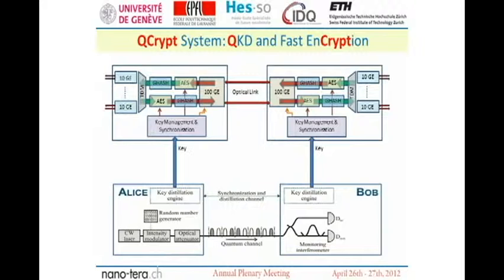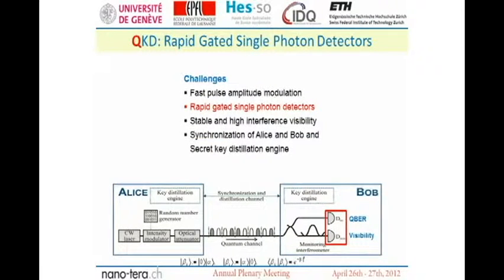The quantum key system produces single photon events. These single photons are transmitted over the long glass fiber and then they are detected at the other side. The production of these single photons with a high repetition rate is very important, but now we look at the other end of the fiber — the reception of the single quantums.